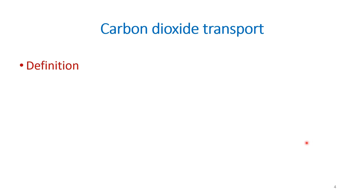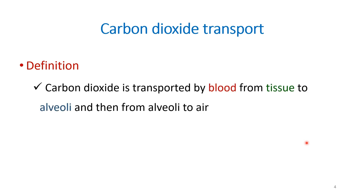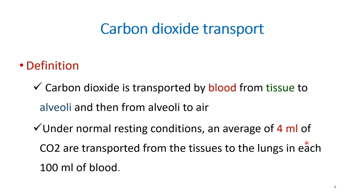Carbon dioxide is transported by blood from tissue to alveoli and then from the alveoli to the air. Under normal resting conditions, an average of 4 ml of carbon dioxide is transported from the tissue to the lungs in each 100 ml of blood.